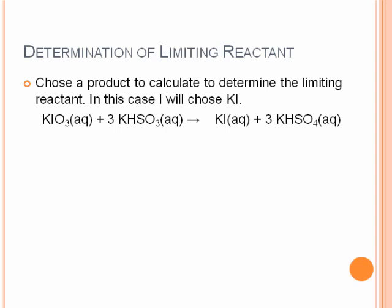We're going to determine the limiting reactant. We need to choose a product to calculate using our moles. In this case, I'll choose Ki arbitrarily. So we're going to start with our 2.43 millimoles of KiO3, and we're going to use our mole ratio, one mole of Ki to one mole of KiO3. So we've got a 1 to 1 mole ratio, giving us 2.43 millimoles of Ki as the product.